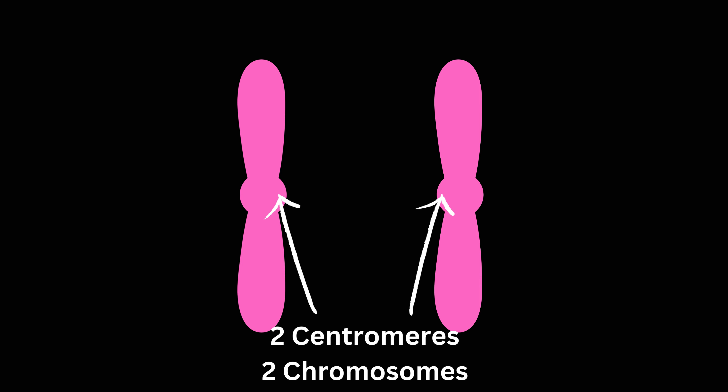But in anaphase, the spindle fibers split apart the two sister chromatids. This centromere will split apart and we will have two chromosomes, because at this stage we have two centromeres. We have two DNAs and we have two chromosomes.